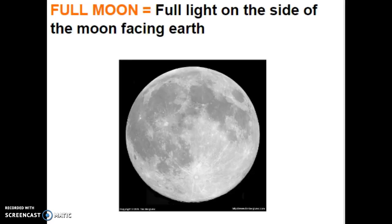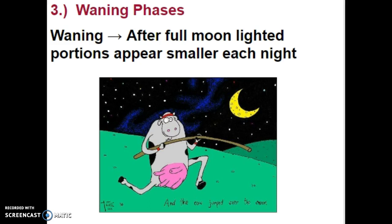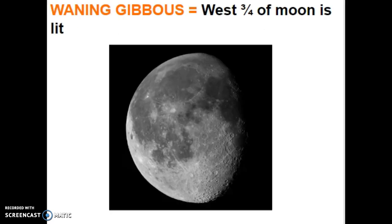The full Moon is where we have full light on the side of the Moon facing the Earth. Then about five to seven days later we go into the waning phases, where the lighted portion of the Moon appears smaller each night and the light disappears from the east side. After a full Moon we have the waning gibbous, where the west three quarters of the Moon is lit.